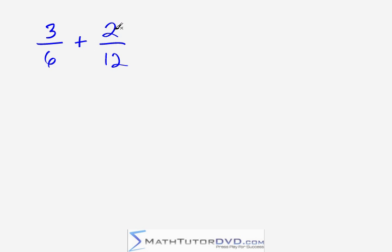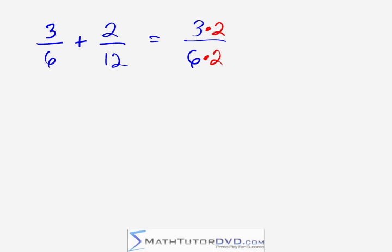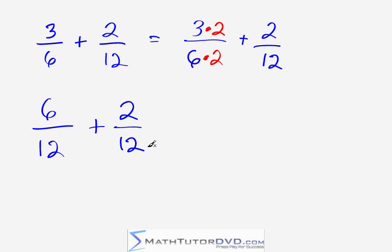Our next problem is three-sixths plus two-twelfths. The first thing you do is check the denominators — I have a six and a twelve. It's very easy to make these match because if I take six and multiply by two, I get twelve. So let me rewrite the problem: three-sixths, and I multiply the bottom by two to get twelve, but I must also multiply the top by two to make this fraction equivalent. I add two-twelfths to that. Three times two gives me six, and six times two gives me twelve.